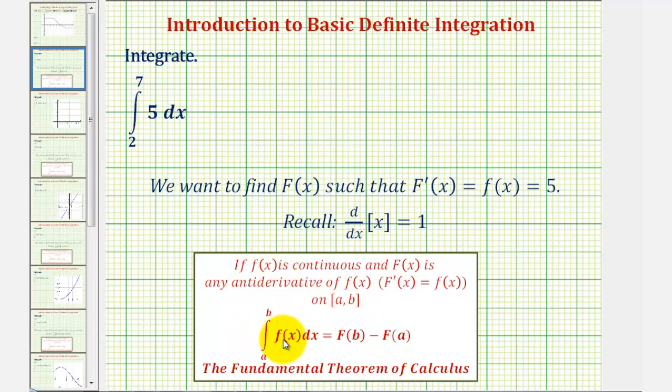Where if f of x, the integrand function, is continuous and big F of x is any anti-derivative of f of x, meaning the derivative of big F of x is equal to f of x on the closed interval from a to b, we can determine the value of this definite integral by determining big F of b minus big F of a.